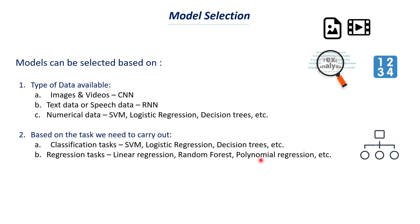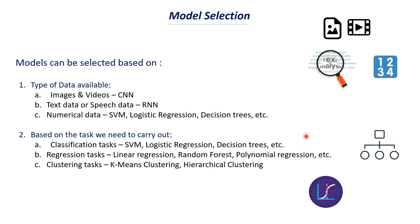One important thing to note is that some models can be used for both classification and regression. For example, support vector machine can be used for both. We also have clustering tasks, where we try to group a dataset based on similarities. On our channel, we did a project on customer segmentation where we grouped customers based on their spending patterns — that is an example of a clustering task. For clustering, we can use K-means clustering or hierarchical clustering.